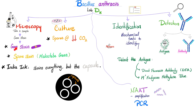Under microscopy it can appear single, paired, or in long serpentine chains. Can you culture the spores? Yes, you can — at low carbon dioxide concentration. Can you stain the spore? Yes, by the malachite green stain. Can you use india ink? Yes, you can. India ink will stain everything, leaving the capsule unstained. As you can see from the diagram here, the unstained part is the capsule.